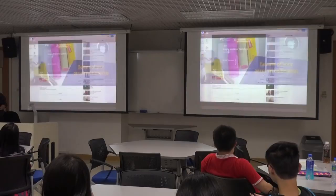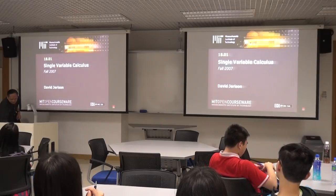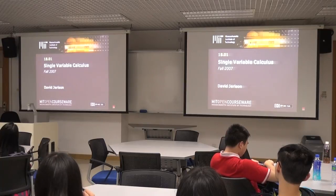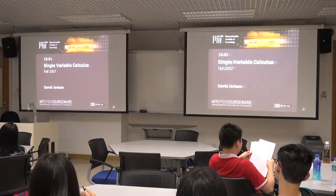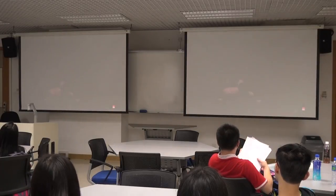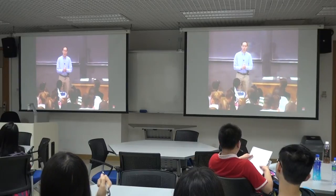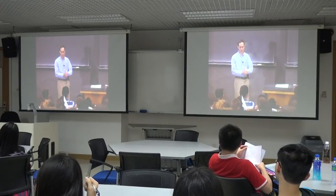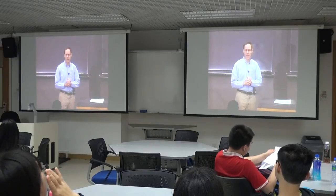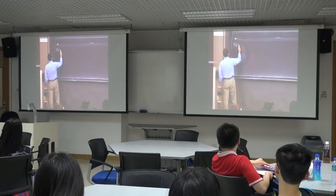The following content is provided under a Creative Commons license. Your support will help MIT OpenCourseWare continue to offer high-quality educational resources for free. To make a donation or to view additional materials from hundreds of MIT courses, visit MIT OpenCourseWare at ocw.mit.edu. In the 12th lecture, we're going to talk about maxima and minima. Let's finish up what we did last time — we only just started with maxima and minima — and then we'll talk about related rates.